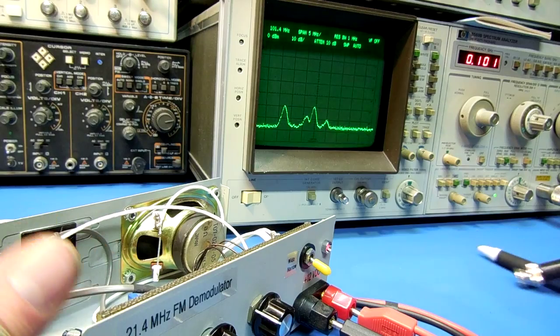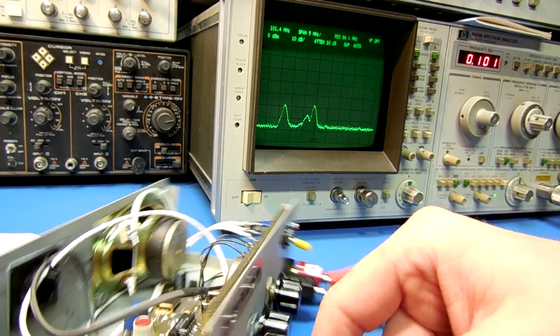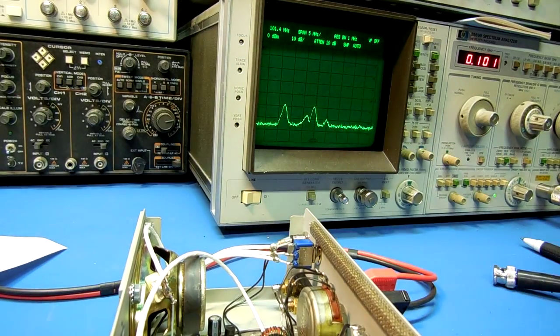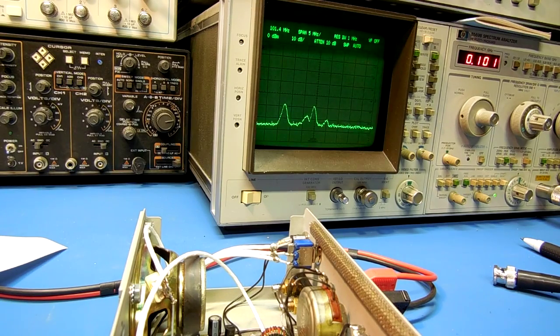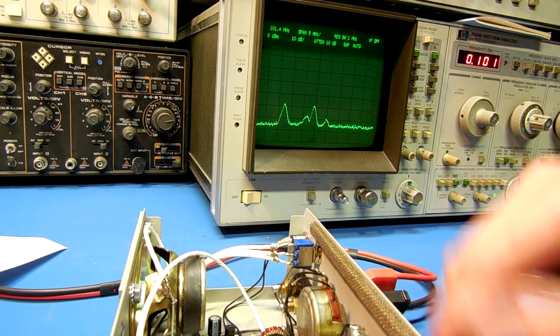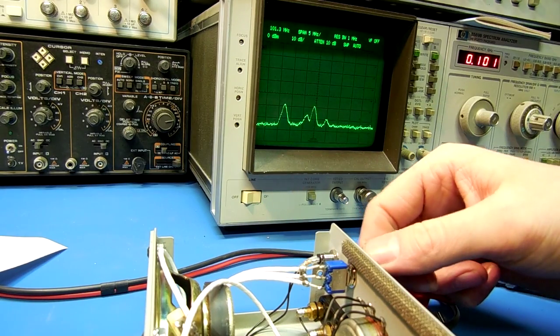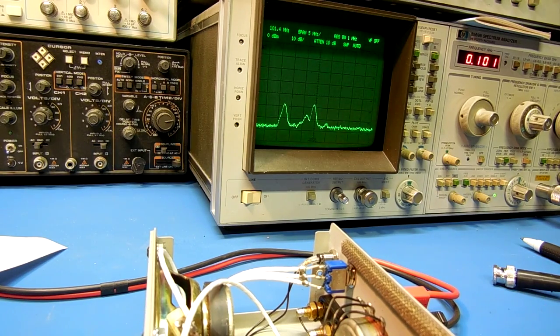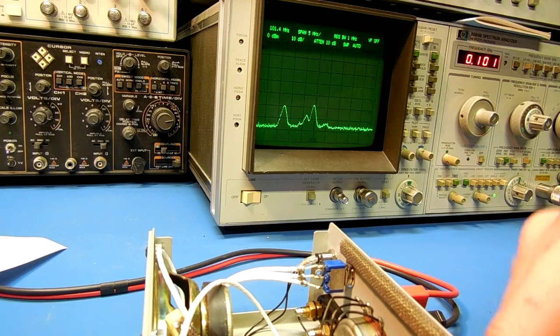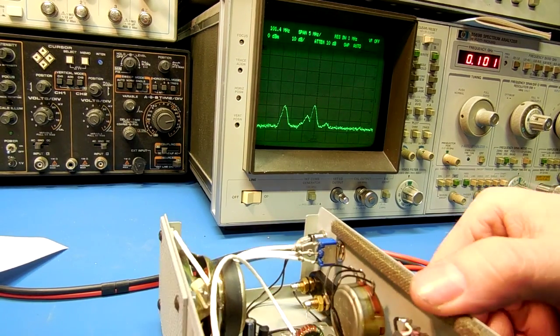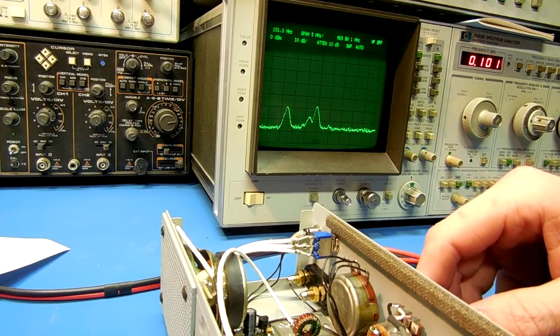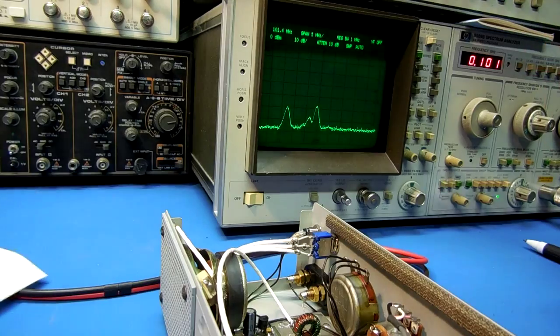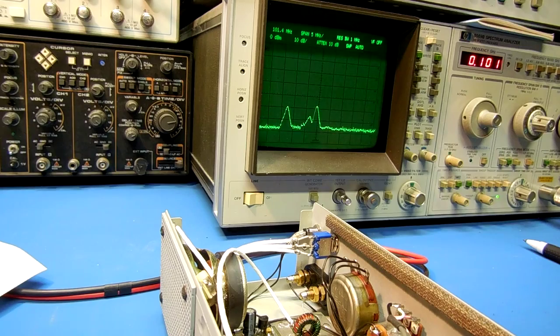Now for a test. I have an RF signal generator set up at 21.4 megahertz. That's negative 100 dBm right now. That's at negative 100 dBm that is a 1 kilohertz tone at a 5 kilohertz deviation.